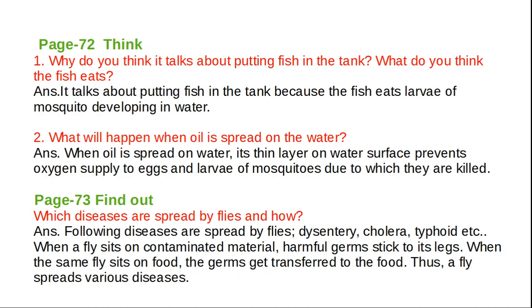Next, what will happen when oil is spread on the water? When oil is spread on water, its thin layer on the water surface prevents oxygen supply to eggs and larvae of mosquitoes, due to which they are killed. The kerosene oil forms a layer on the surface of water, reducing the supply of oxygen. Without sufficient oxygen, the mosquitoes cannot survive. This is another way to reduce the mosquito population.